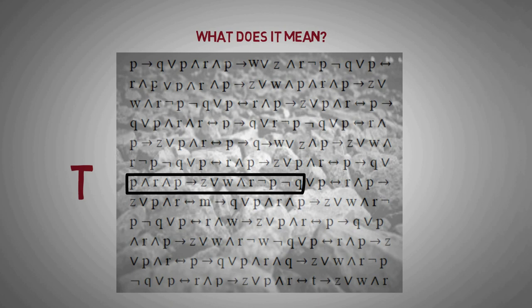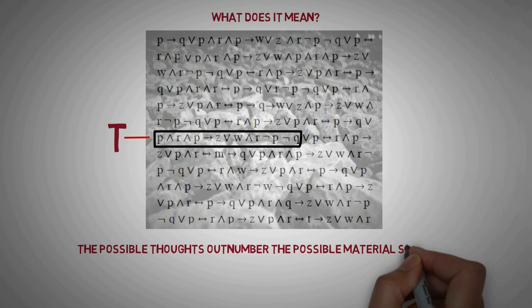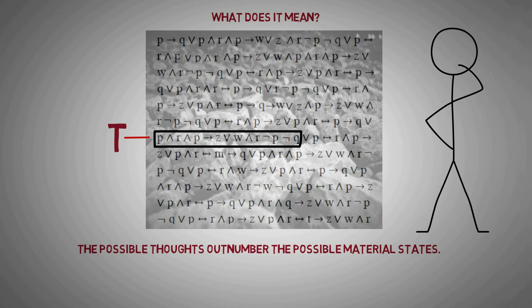If all of this is right, then by Cantor's theorem, we get a big result, namely that the logically possible thoughts outnumber the logically possible material realities. And that implies that the conceptual terrain is not reducible to the material terrain.